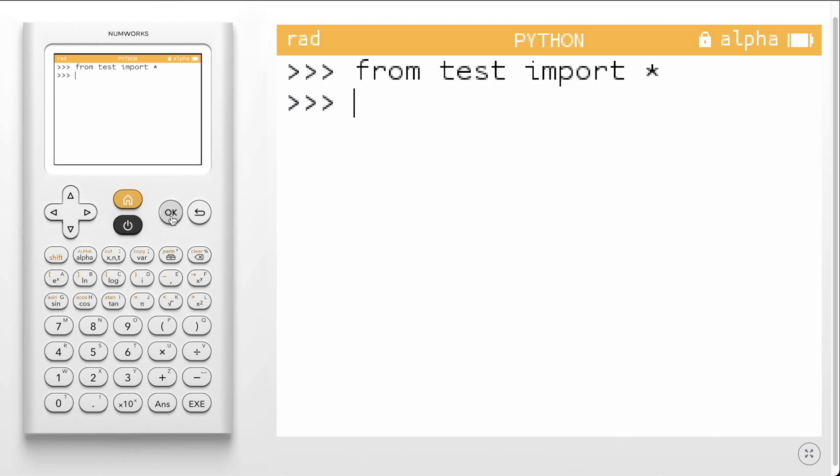We can access the functions that are defined in the script by clicking the variable key. We select Mean and input two values.